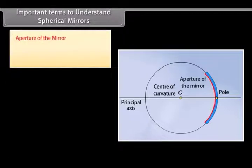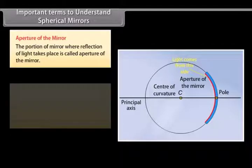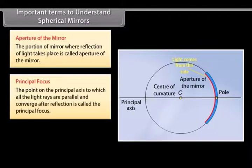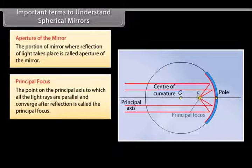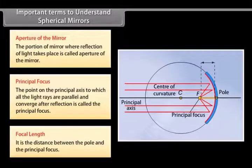The aperture of the mirror is the portion of the mirror where reflection of light takes place. The principal focus is the point on the principal axis to which all light rays, parallel to the principal axis, converge after reflection. The focal length is the distance between the pole and the principal focus.